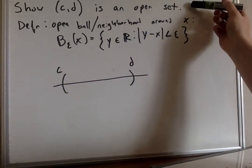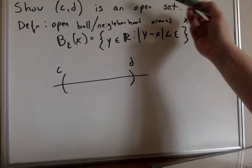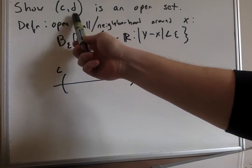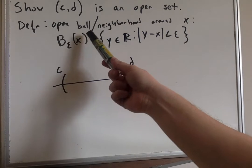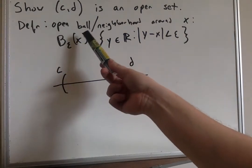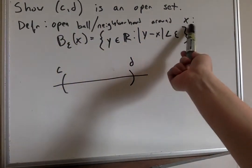So we want to show that in two dimensions in ℝ that the interval from c to d is an open set. Now, hopefully at this point, you've been introduced to the open balls or a neighborhood around a point x.